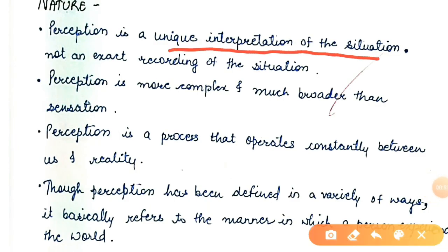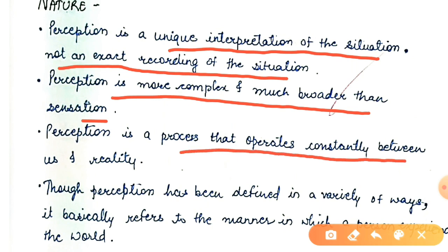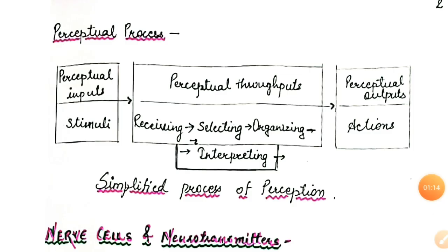Now the nature of perception: perception is a unique interpretation of the situation, not an exact recording of it. Perception is more complex and much broader than sensation. Perception is a process that operates constantly between us and reality. Though perception has been defined in a variety of ways, it basically refers to the manner in which a person experiences the world.